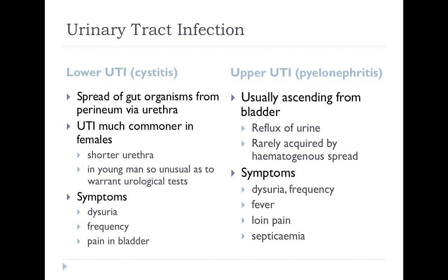When thinking about urinary tract infection, we think about the anatomy of the urinary tract. It divides into lower UTI and upper UTI. Lower UTI, commonly called cystitis, is very common, mainly seen in the community but occasionally presents to hospital. It occurs because of the spread of gut organisms from the perineum via the urethra, and is therefore much commoner in females because of the anatomy.